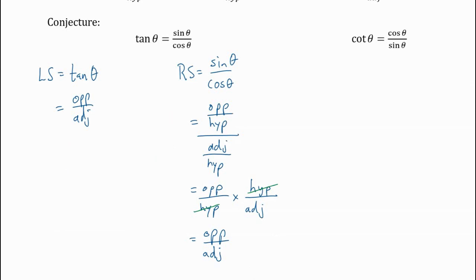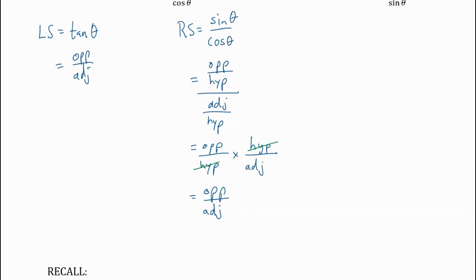This is the structure of how identities should be presented: left side separated from right side, each worked on independently. At the very end, when finished, I say this equals the left side. Then I say QED — though you don't have to say QED, but you must have some kind of summary statement: 'therefore the original identity has been proven.' Another common way to end proofs is with a small square, or you could just write 'left side equals right side, therefore' and restate the identity.